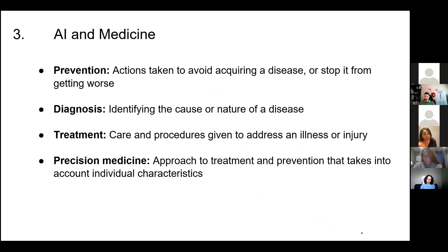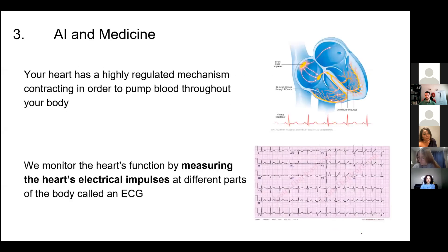If the main tasks of a doctor are prevention — actions taken to avoid acquiring a disease — diagnosis, identifying the cause or nature of the disease, and treatment planning, then I'm going to go through examples to show you how AI is making advancements in each one of these fields. We're also going to talk about precision medicine — the idea of taking individual patient characteristics into account. Let's start with the heart. Your heart is a highly regulated mechanism that contracts blood throughout your body. Without it, you're going to die.